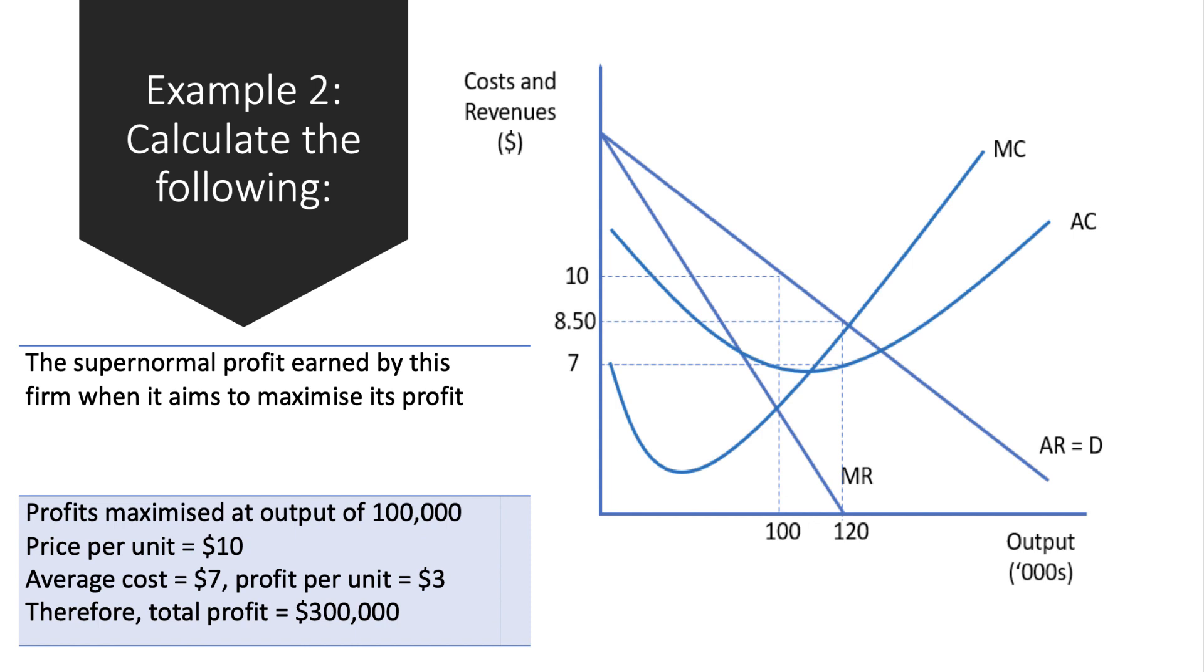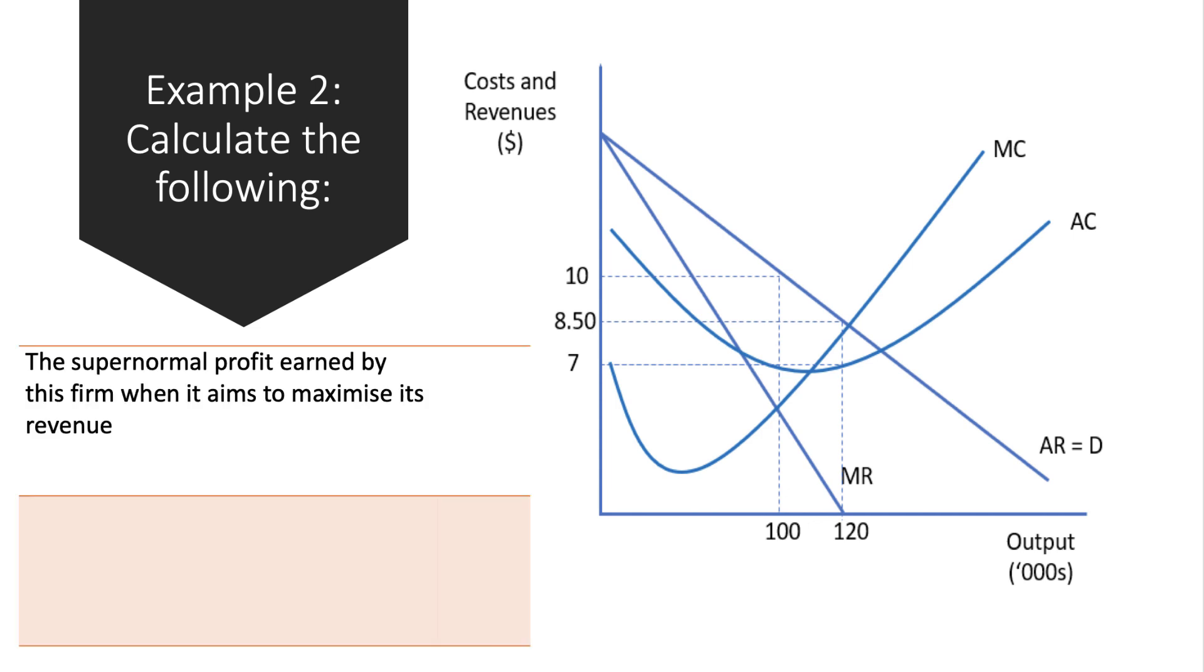What would happen if the firm changed its objective? What would the supernormal profit be if the firm aimed to maximize revenue? If you aim to maximize revenue you move further down the demand curve to the point where marginal revenue is zero, which gives an output of 120,000 units.